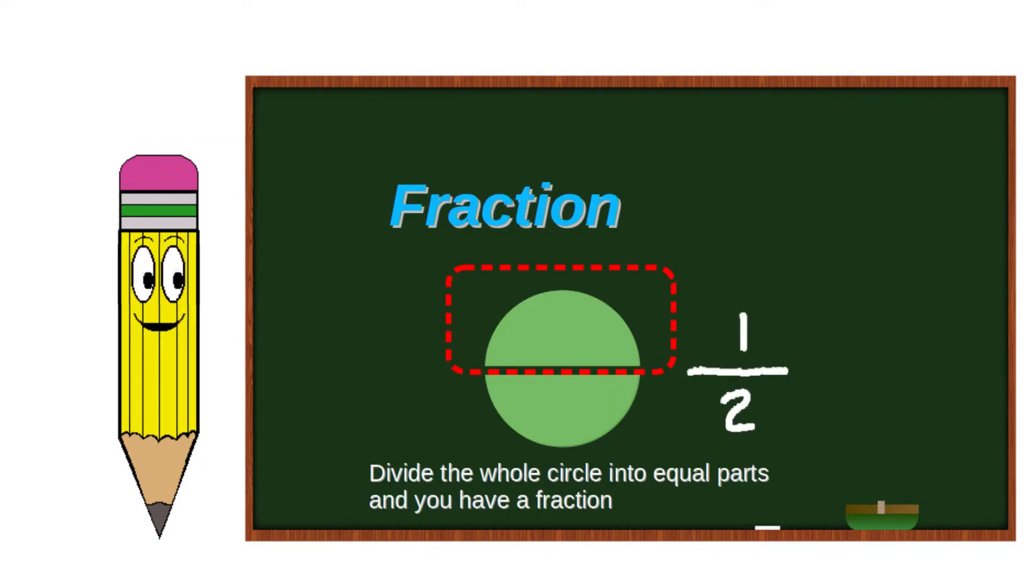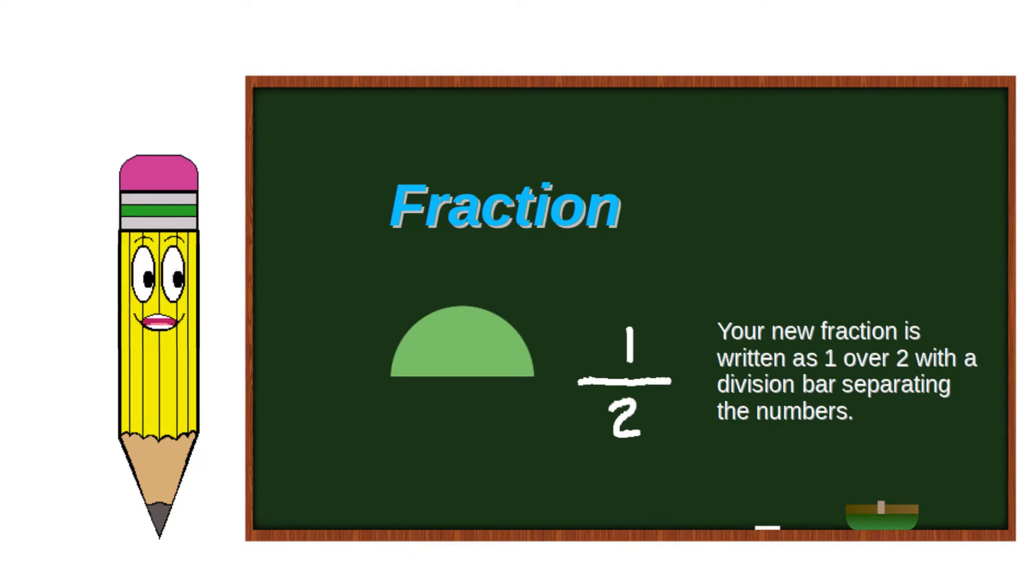Divide the whole circle into equal parts and you have a fraction. Your new fraction is written as 1 over 2 with a division bar separating the numbers.